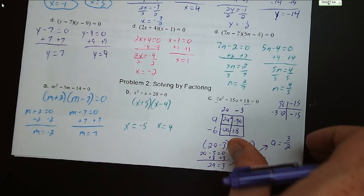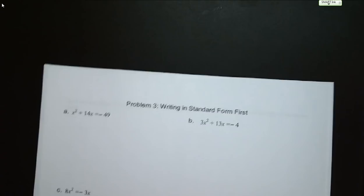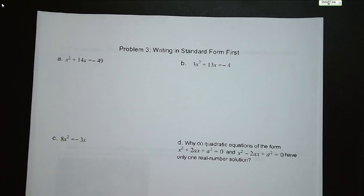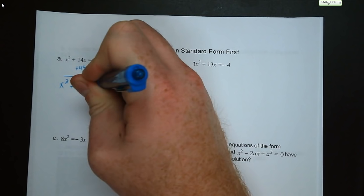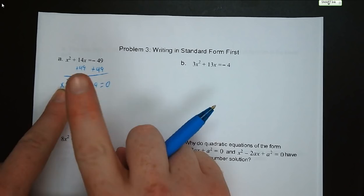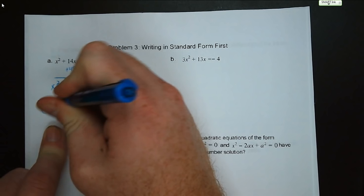Let's move on to problem number 3. We need to first write each equation in standard form because they're not there yet. For the first problem, we add 49 to both sides, giving x squared plus 14x plus 49 equals 0. Recognizing this as a perfect square trinomial, we factor as x plus 7 squared equals 0, so x equals negative 7.